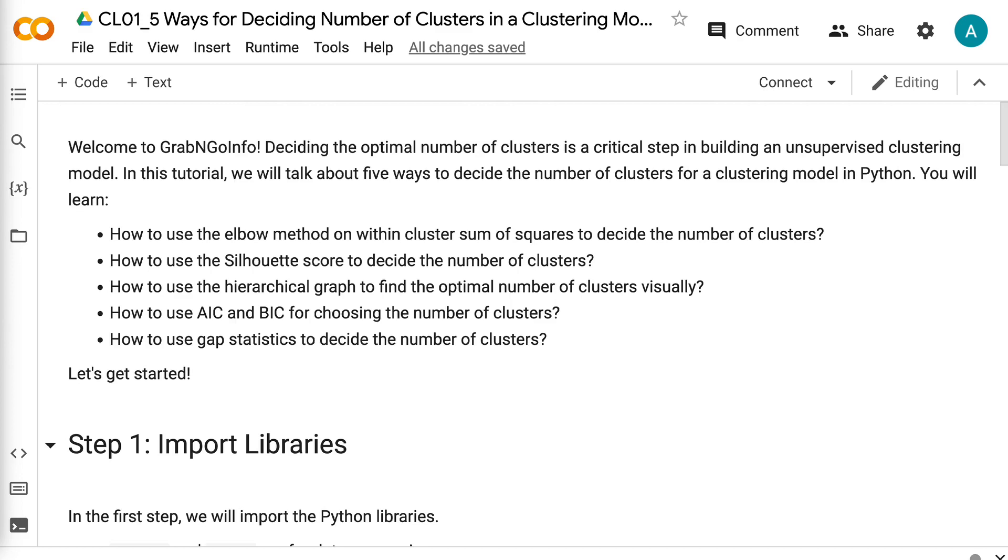You will learn how to use the elbow method to decide the number of clusters, how to use the silhouette score to decide the number of clusters, how to use the hierarchical graph to find the optimal number of clusters visually, how to use AIC and BIC for choosing the number of clusters, and how to use gap statistics to decide the number of clusters. Let's get started.